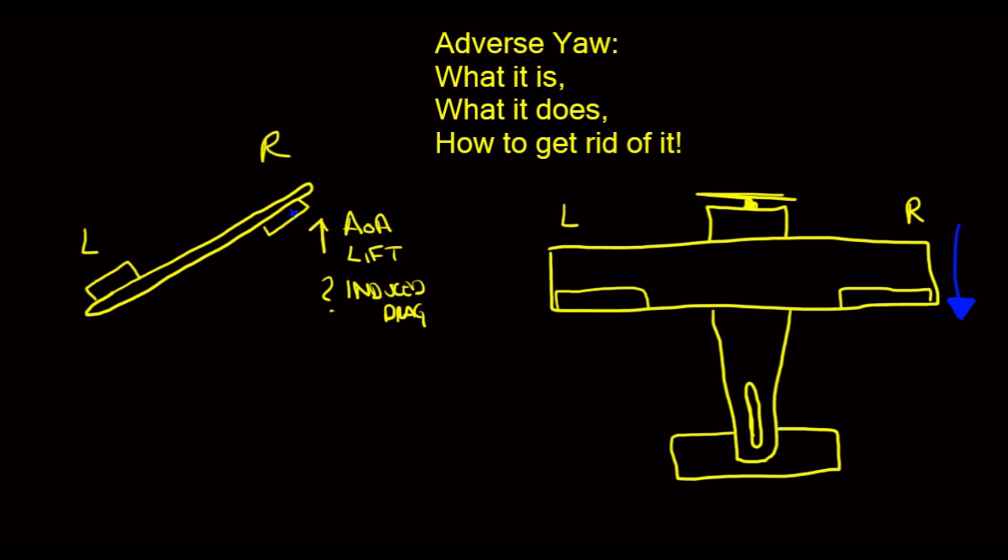So what happens? Well, because this wingtip is receding and this one is progressing, or however you want to say it, the nose wants to turn to the right. And it does turn to the right.